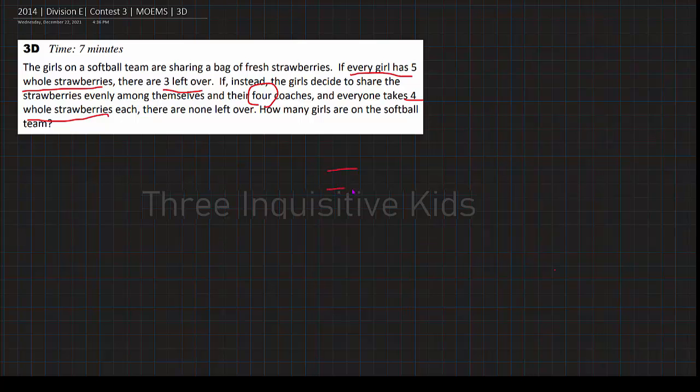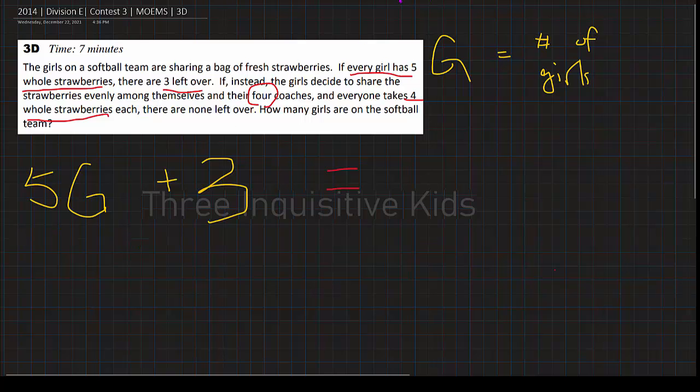So there is our equation. If every girl, I'll set G as number of girls on the softball team. And the coaches, I'll just do add four because we already know how many coaches they have. So if every girl has five whole strawberries, that means the number of strawberries taken up by the girls would be 5G, because every girl has five. There are still three left over, so plus those three. That's the number of strawberries there are.